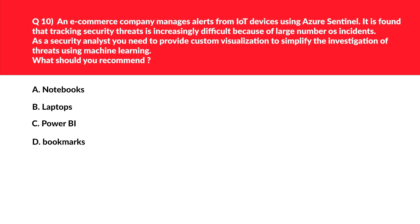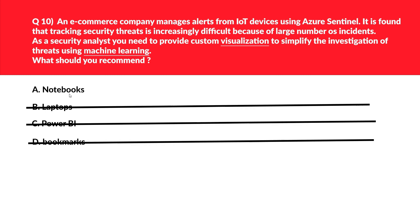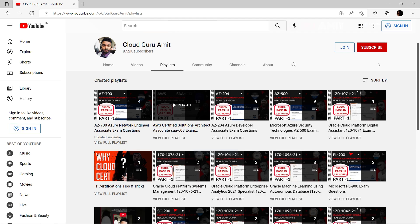We are at question number 10, related to machine learning. Data scientists use Jupyter Notebook — that is Python code — to work with machine learning tools. Also, notebooks are meant for visualization. Quick tip for the exam: whenever you see keywords like machine learning, the notebook, option A, should strike in your mind. Therefore we will reject the rest of the options and lock A as the correct answer. Please don't go away — let's meet in part 2 of SC-200.